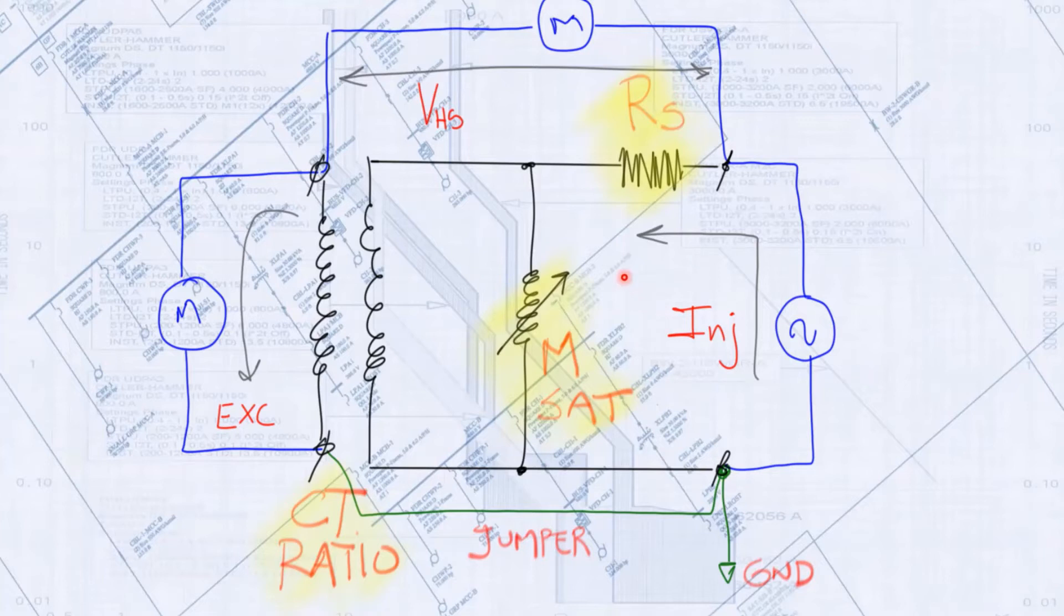The main purpose of testing the CT is to evaluate its performance for the intended application. The main three characteristics that help us evaluate and apply CT calculations are the ratio, the saturation curve, and the secondary winding impedance. The standard method for CT testing generally consists of injecting current through the secondary terminals of the CT and measuring excitation on the primary side of it, and between the H1 and X1 terminals.